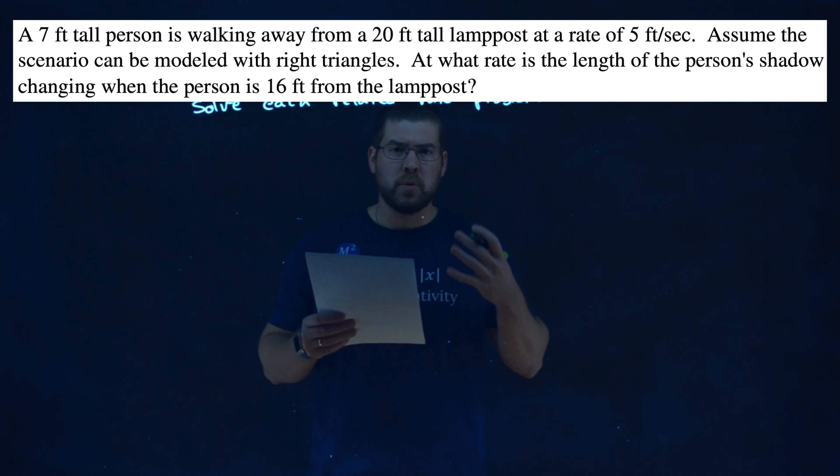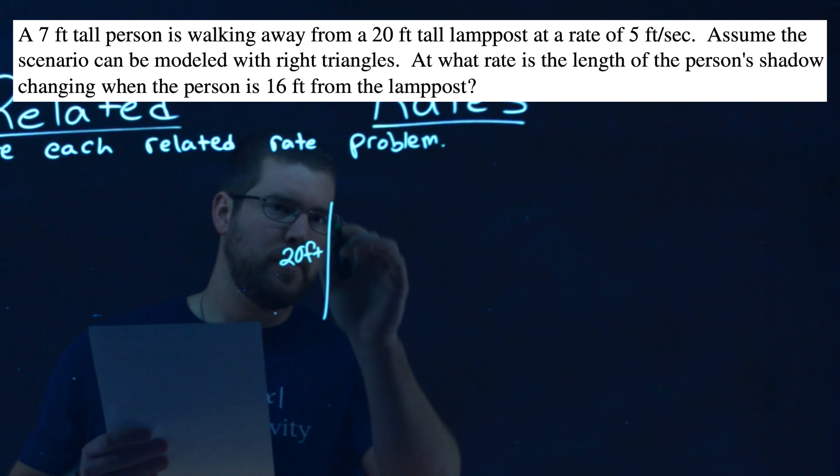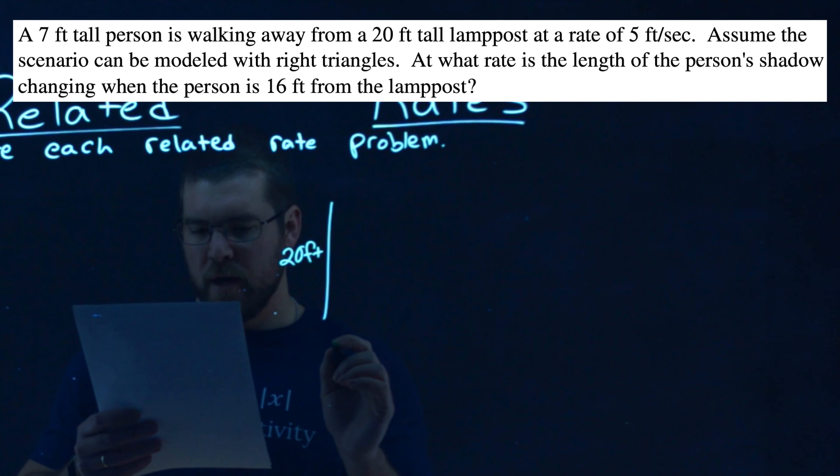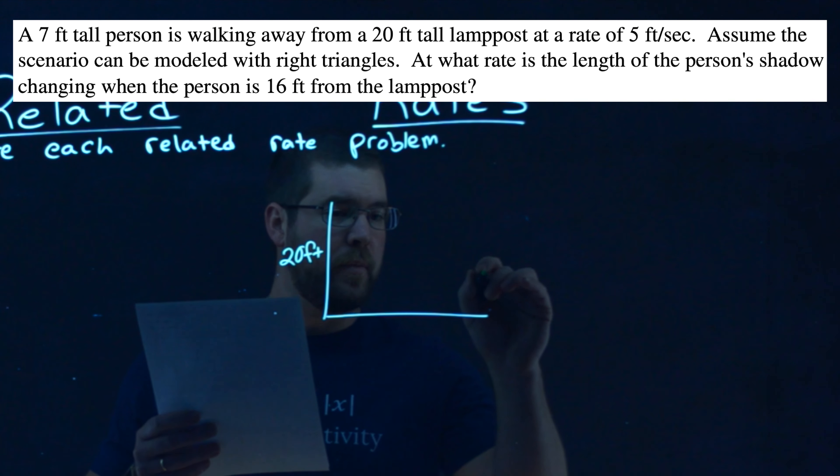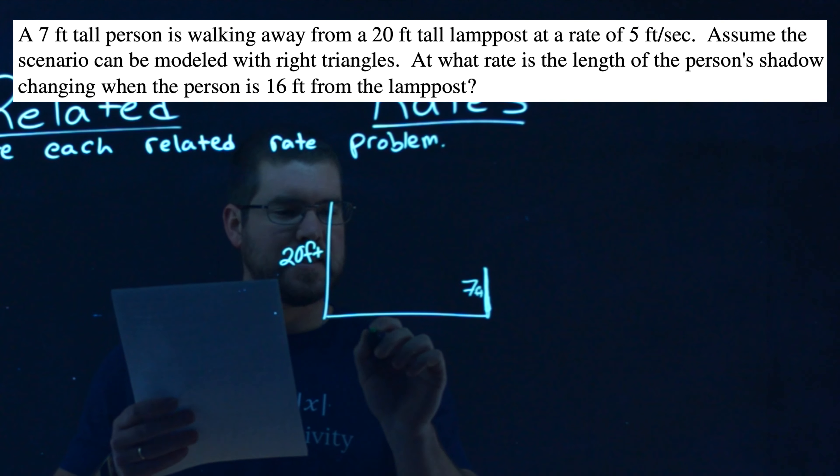Let's go get a visual here. So we have a lamppost, that's 20 feet tall, and it should be a right triangle, it's not really straight, but it's all good. Now a person is standing who's 7 feet tall, a very tall person. Let's make that just a line here. Again, my straight lines aren't the best. We have 7 feet,